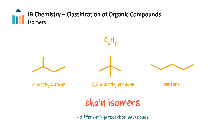If isomers have different arrangements of carbon-carbon and carbon-hydrogen bonds — in other words, different hydrocarbon backbones — they are called chain isomers. These three compounds are chain isomers since they can be produced by changing the size and positions of side chains.